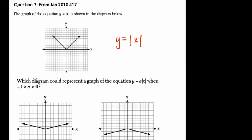And they want to know which diagram could represent a graph of the equation when y equals a times absolute value of x, when a is between negative 1 and 0. So y equals a times x, and here a, they're saying,